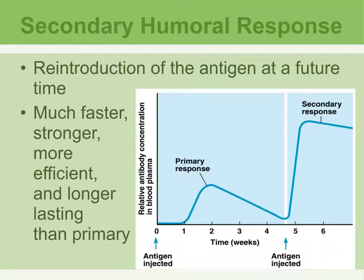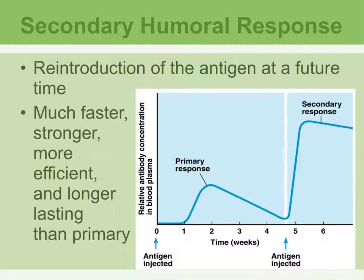The Secondary Humoral Response occurs when you come in contact with the same antigen again at a later time — potentially years later. The second time the antigen is reintroduced into the body, the response time is much faster, more efficient, and lasts much longer.